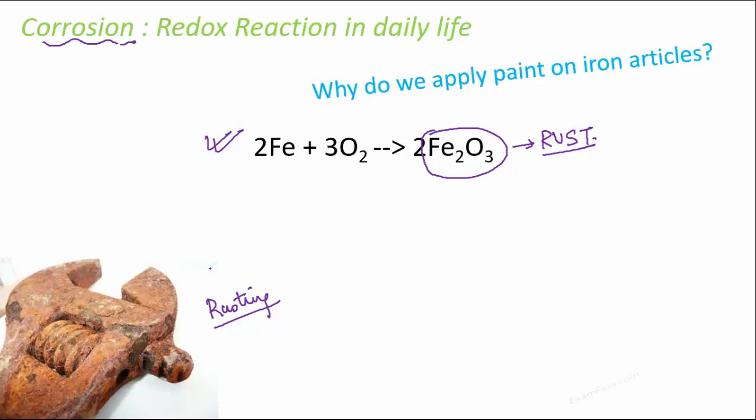Rusting is a result of a redox reaction. Why do we apply paint on iron articles to prevent rusting? Because the moment we apply paint on iron articles, we break the contact of iron with the oxygen in the surroundings, and that is how we prevent rusting. That's the reason we generally paint iron articles.